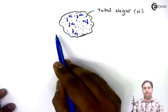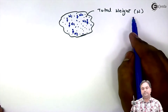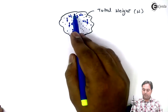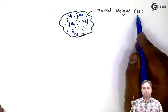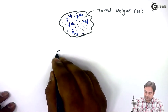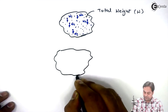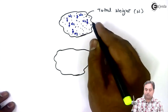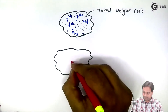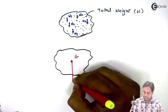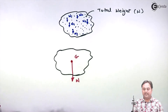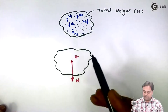If we add all the small individual weights, that becomes the total weight W. Instead of showing the weight over individual points, we can show this total weight W about a single particular point, and that point is called the center of gravity.